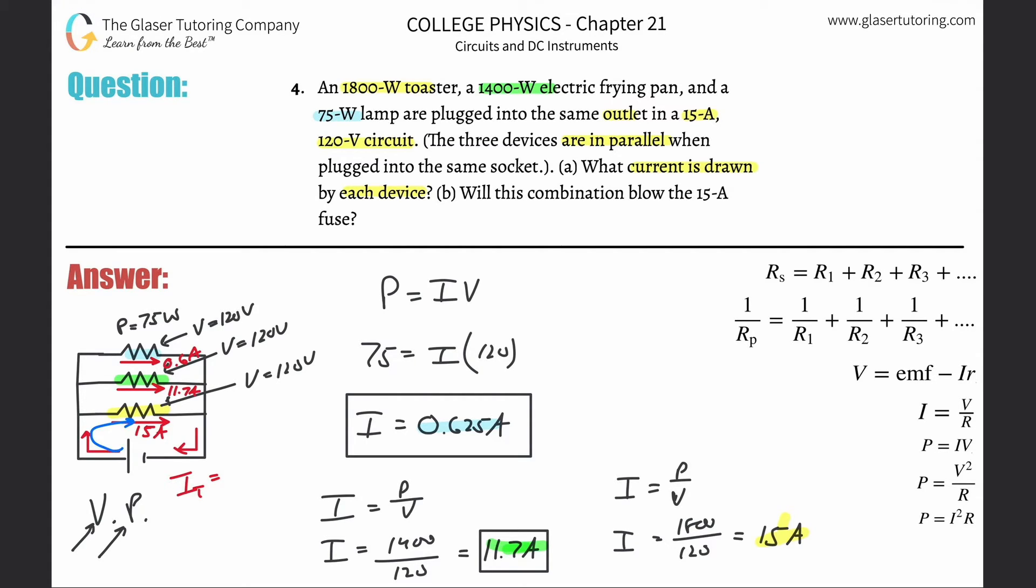circuit. It doesn't have to flow through each resistor; it can flow through several resistors. What I'm trying to say is that the total current here in a parallel circuit will be the addition of the current flowing